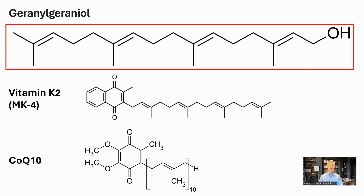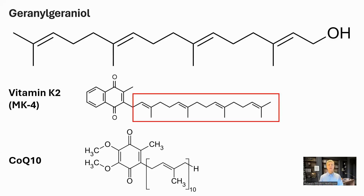GG is an underappreciated molecule as it forms part of some of the key metabolites in plants and mammals, including humans. It is the tail on vitamin K2. Vitamin K2 is also known as menaquinone, and the tail can be of varying length. The different forms are named after the number of isoprene units in the tail. Common forms are MK7 and MK4. MK4 is the only form made in humans and requires GG — it is made by attaching GG to the end of vitamin K1.